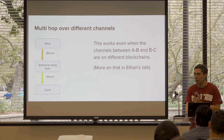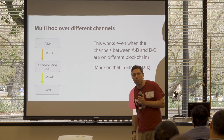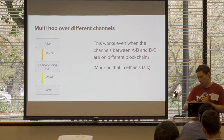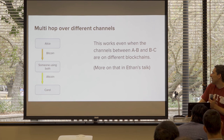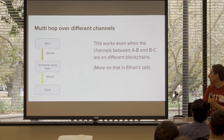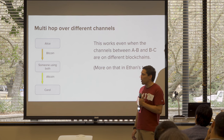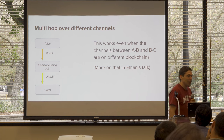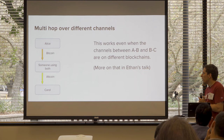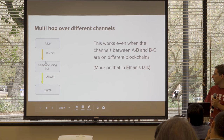You can have multi-hop payments over different channels, and Ethan is going to talk about this in detail in two hours. From the software's point of view, it doesn't really matter what blockchain those channels are on. Since most are similar to Bitcoin in their operation, you could have Alice having a Bitcoin channel to someone who has an altcoin channel to Carol — say, I'll send you a Bitcoin if you send this person 20 altcoins.